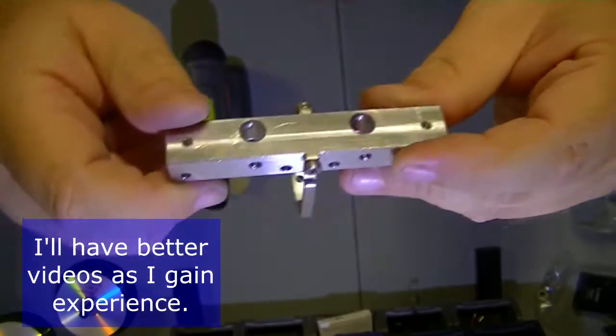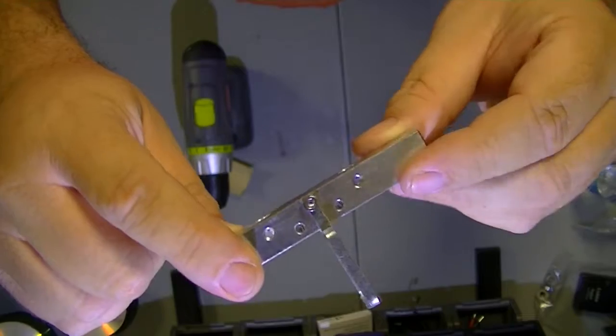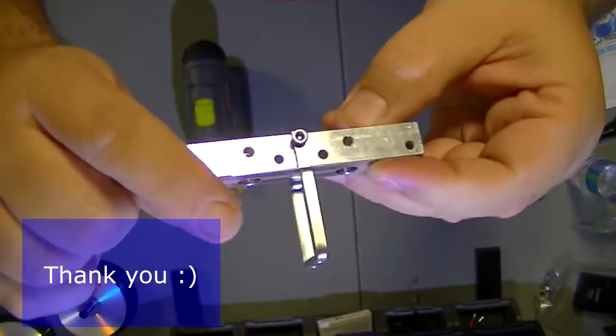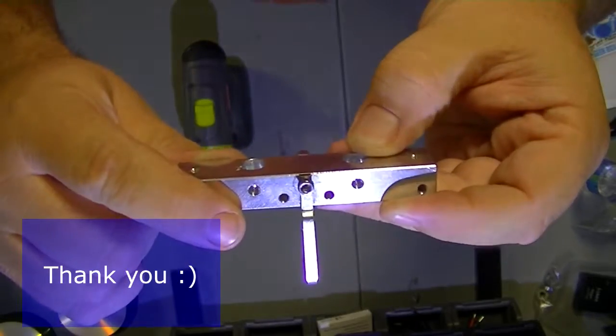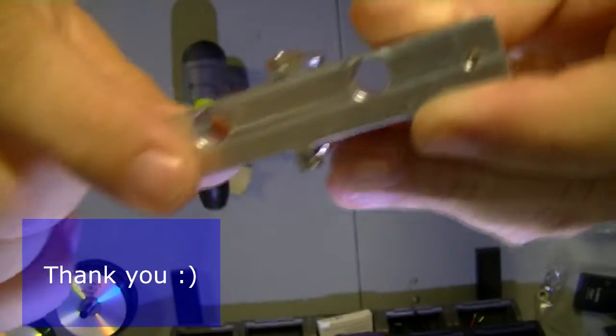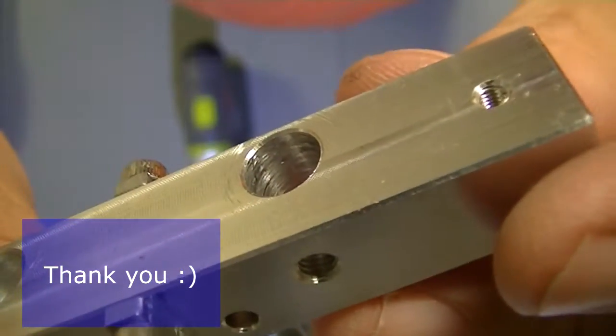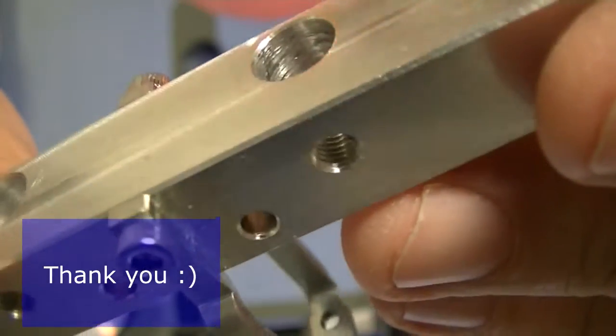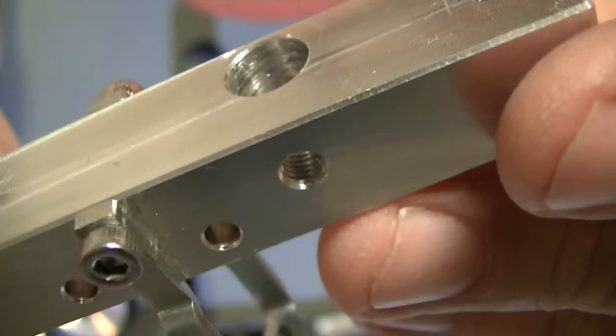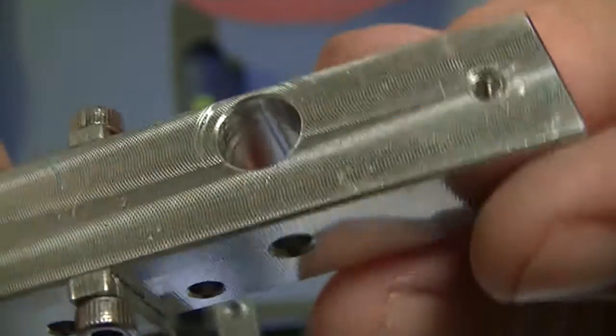So when they drilled the holes out, they left burrs and it almost looked like it was threaded. There was enough grind marks in there. You can see how rough it is in there, and it's like that all the way around.